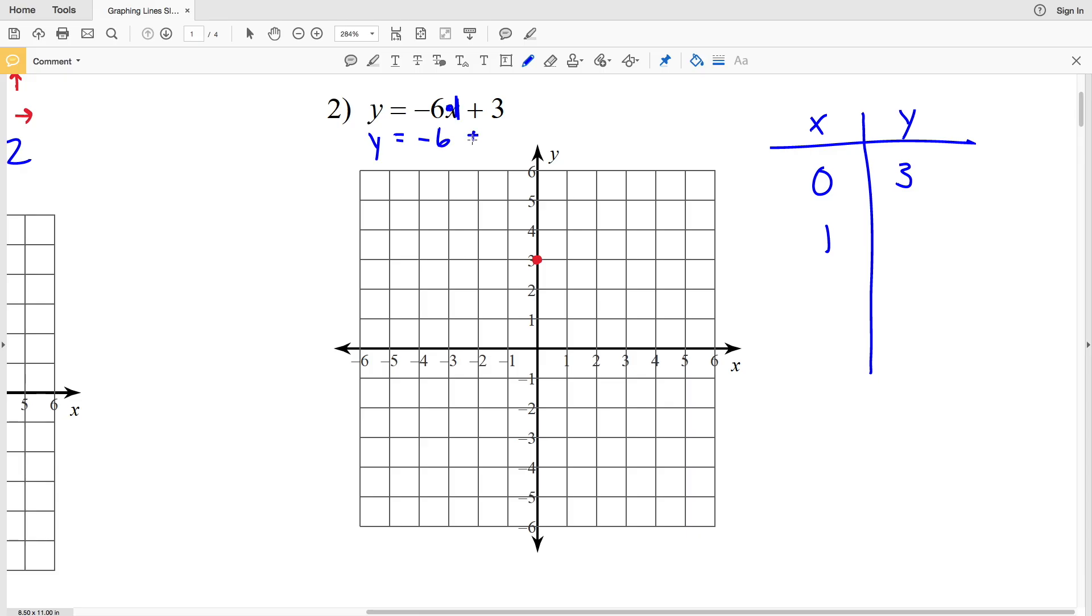When we plug in 1 for x, we get that y equals negative 6 times 1, which is negative 6, and then add the 3. So that's going to be y equals negative 6 plus 3 is a negative 3. So when x is equal to 1, y equals negative 3. So let's go ahead and graph the point 1 comma negative 3: 1, negative 3. And then go ahead and connect those points with the line.